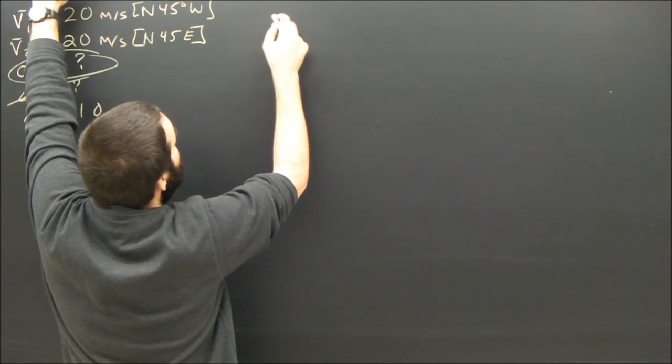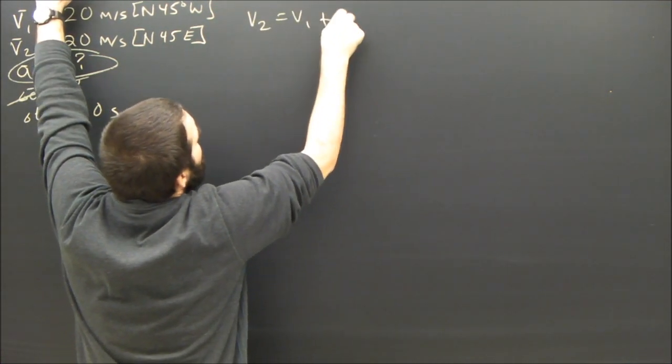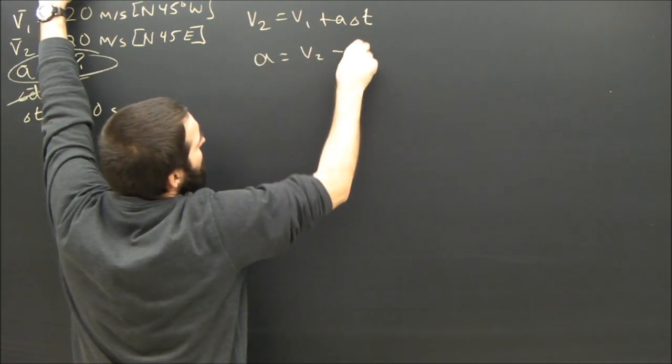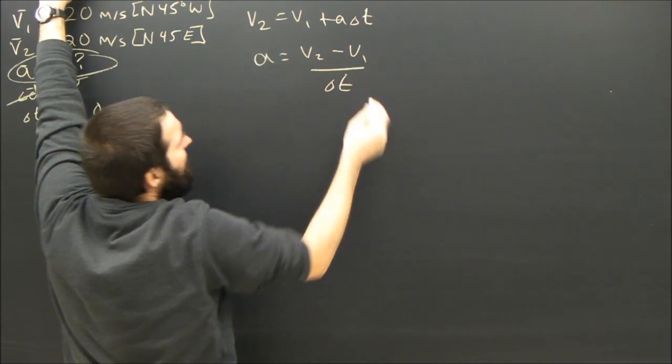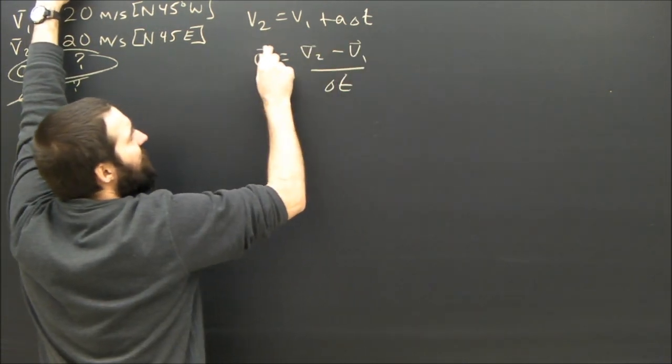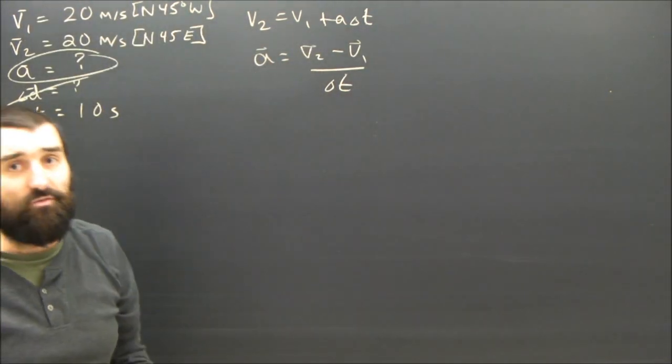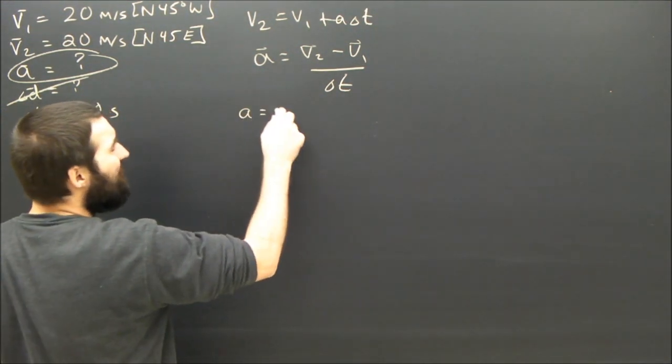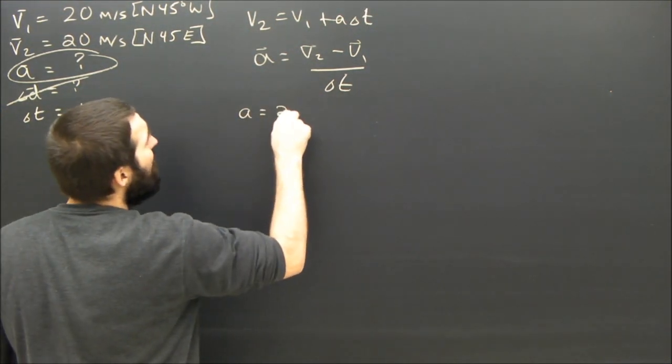Which is the original one. V2 equals V1 plus A delta T. If I rearrange that, I call it the original formula because it's really just the definition of acceleration, right? Acceleration is V2 minus V1 over T. I'm going to dump in my givens just like I always do. I'm going to be careful.